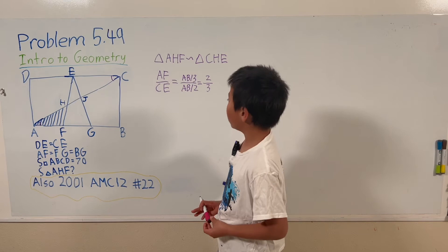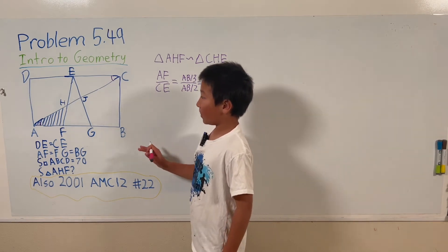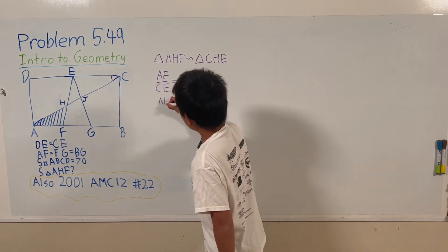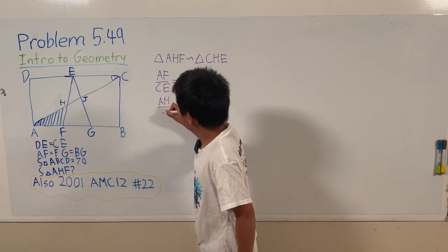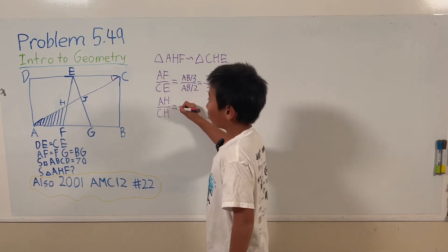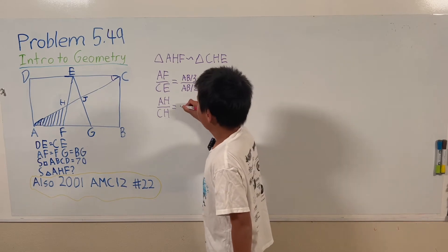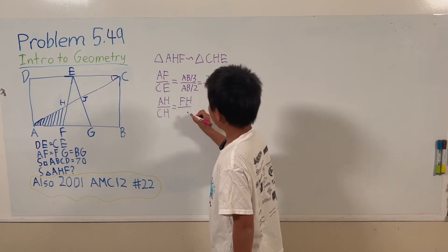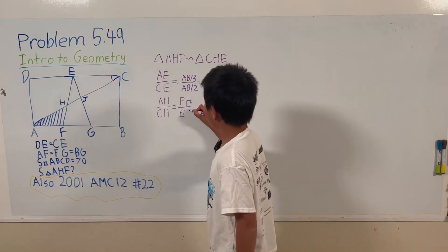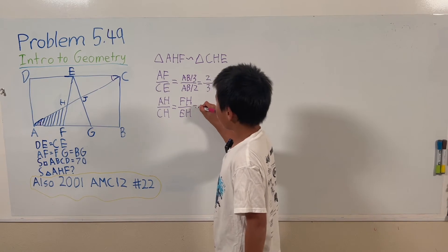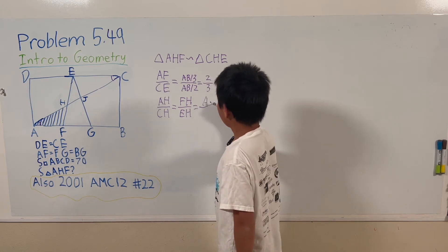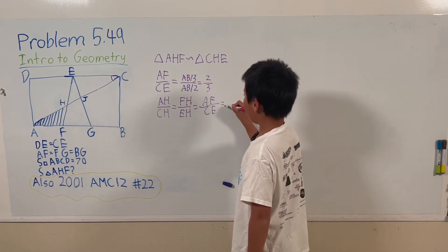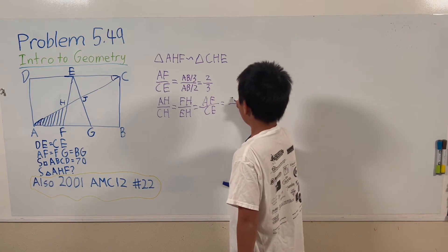Now we can also know that AH over CH equals FH over EH equals AF over CE. These are all equal to two-thirds.